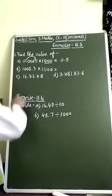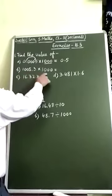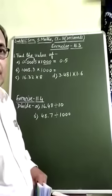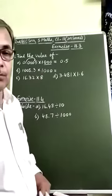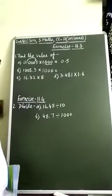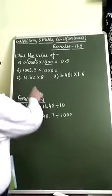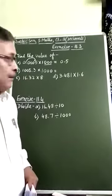Look at B. It is 1005.3 into 1000. Multiplier is 1000 and it has three zeros. Therefore, decimal point has to move three digits to the right side. But, as you notice here, there is only one digit after decimal point.